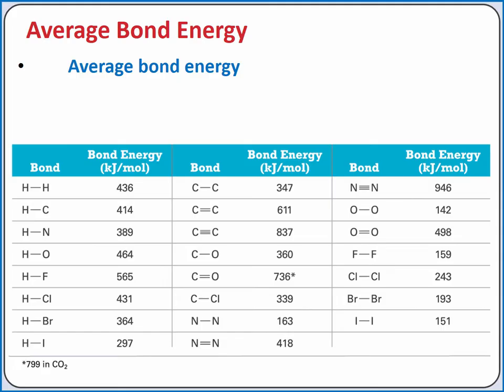For example, from this table of average bond energies, we can see that as we share more and more electrons between two atoms, moving from a single to a double to a triple bond, the bond energy increases. We see this pattern comparing carbon-carbon single, double, and triple bonds,